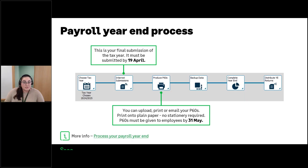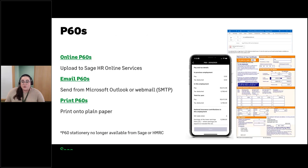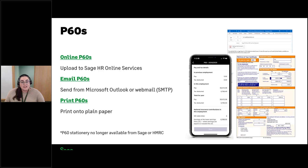Those are the six steps, but before we look at them in the program I want to go back to the P60s and talk about the different options. First, you can upload online P60s to Sage HR — similar to how you would send online payslips, or the online bureau portal if you're an accountant — so each employee can access them online or on the mobile app. This seems to be the most popular way people are producing P60s this year.